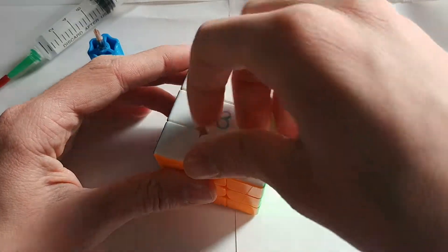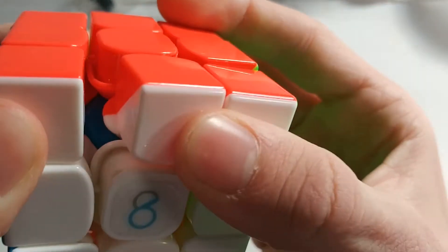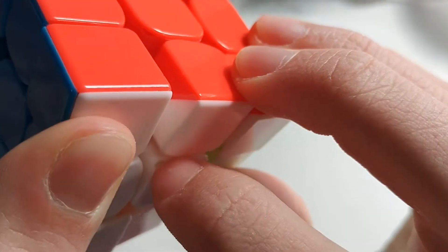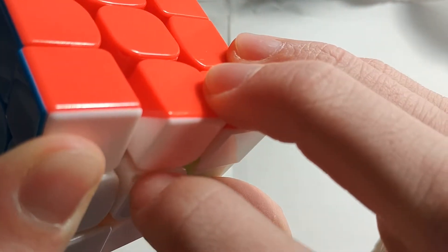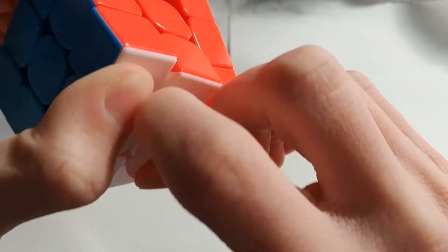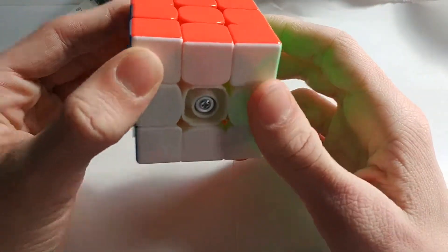So step one of this process is you need to remove all the center caps. Now, there should be a little indent somewhere on your center cap, whether it's on the corner or on this middle part, but you're going to put your nail in between there and you can just pop it off.